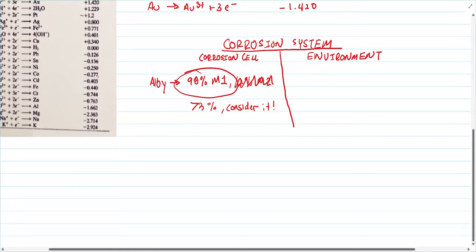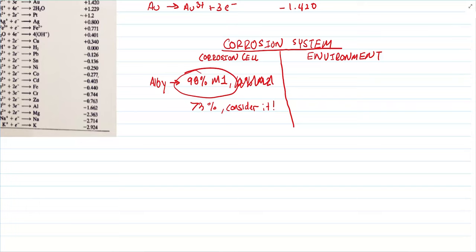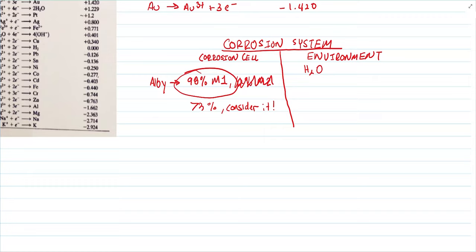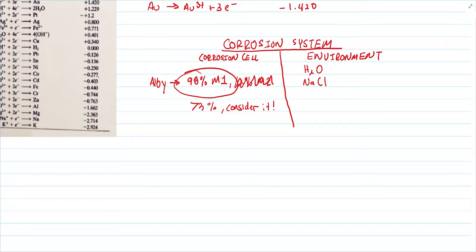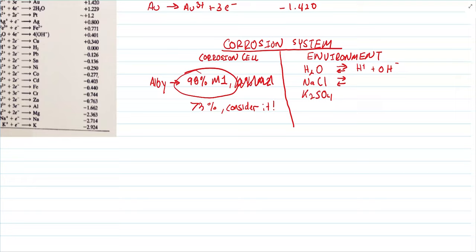Your corrosion system has two components: on the left-hand side is your corrosion cell, which is your metal; on the right-hand side is your environment. For the environment, consider: water (H₂O), salt or saline solution (NaCl), and sometimes potassium sulfate (K₂SO₄). You break these down — H₂O gives H⁺, NaCl gives Na⁺ + Cl⁻, and K₂SO₄ gives SO₄²⁻ + 2K⁺.